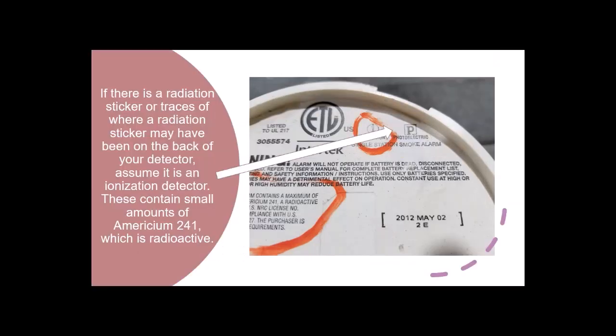So when you see the word radioactive or americium-241, then we know you have an ionization type detector — or in this case a combination ionization and photoelectric. In this slide we see the combination ionization and photoelectric, pointing to both. Again in the lower left of the manufacturer's label we see the words radioactive, NRC license number, and americium-241. These are all indications that the unit has a radioactive isotope.